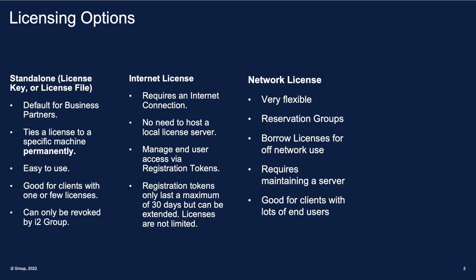The three different options available are standalone licensing, network licensing, and internet licensing. Note that by default at this release, if you're a business partner, you will be limited to standalone licensing. If you're one of our business partners who has a good business case for using a different form of licensing — for example, you're a support-providing partner — please get in touch with i2 Product Support who will take care of you.